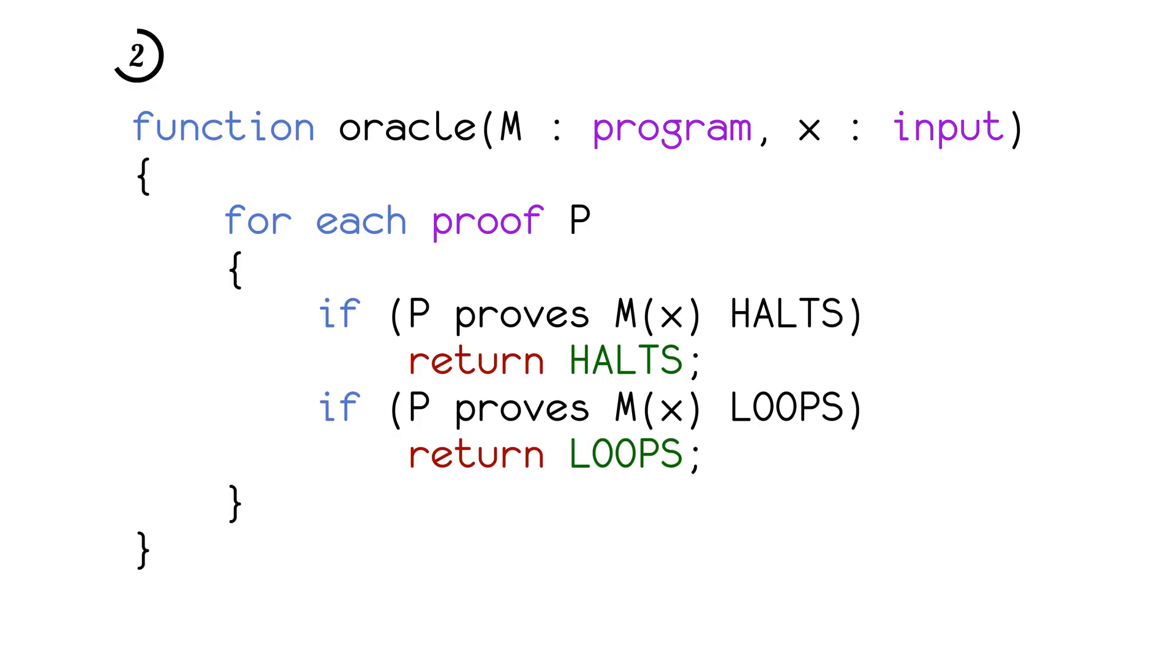There's a second way in which this program might fail, which is if it returns the wrong answer. For this to happen, we find a proof that M halts even though it loops, or a proof that M loops even though it actually halts. Either way, we found a proof of a false statement, which is the definition of unsoundness.